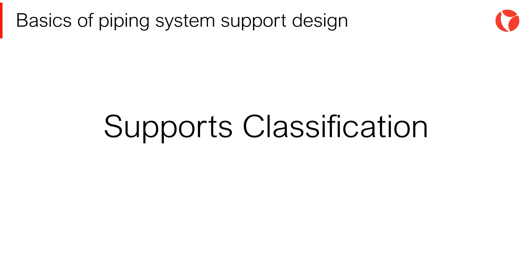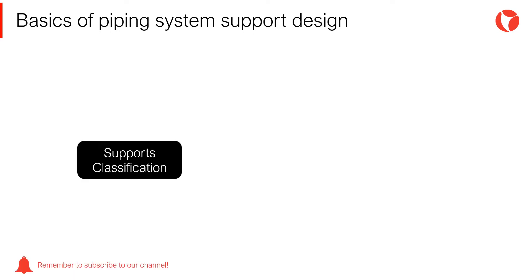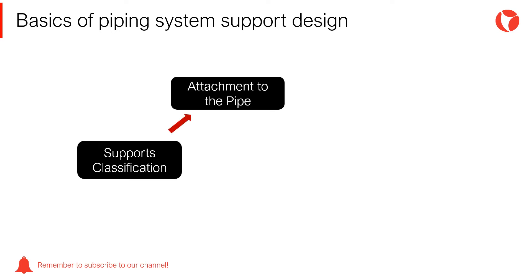The selection of an appropriate type of support for any given application is governed by the configuration of the piping system and the operating conditions. Generally, supports are classified according to the way they are attached to the pipe and their method of construction.